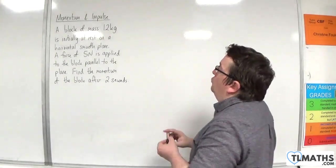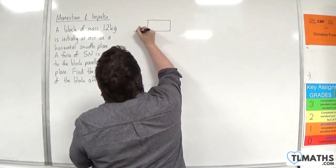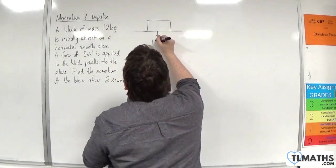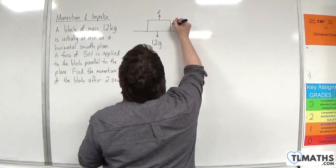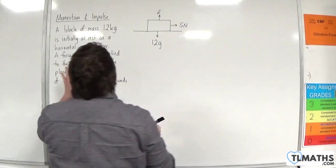Okay, so let's draw a quick diagram so we can visualize what's going on. Here's my block and it's on a surface. It has a weight of 12g. There'll be a normal reaction force and a 5 newton force is being applied and it's a smooth plane.